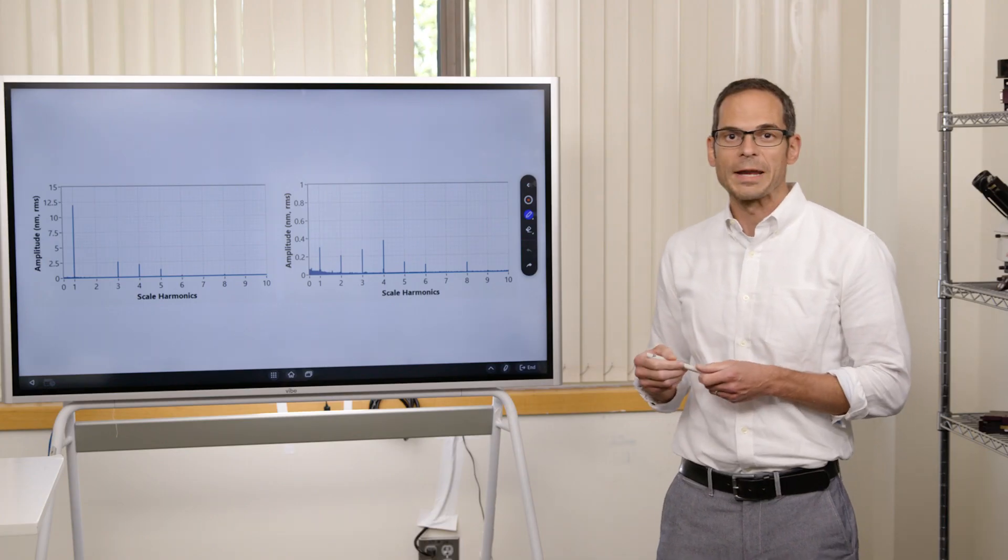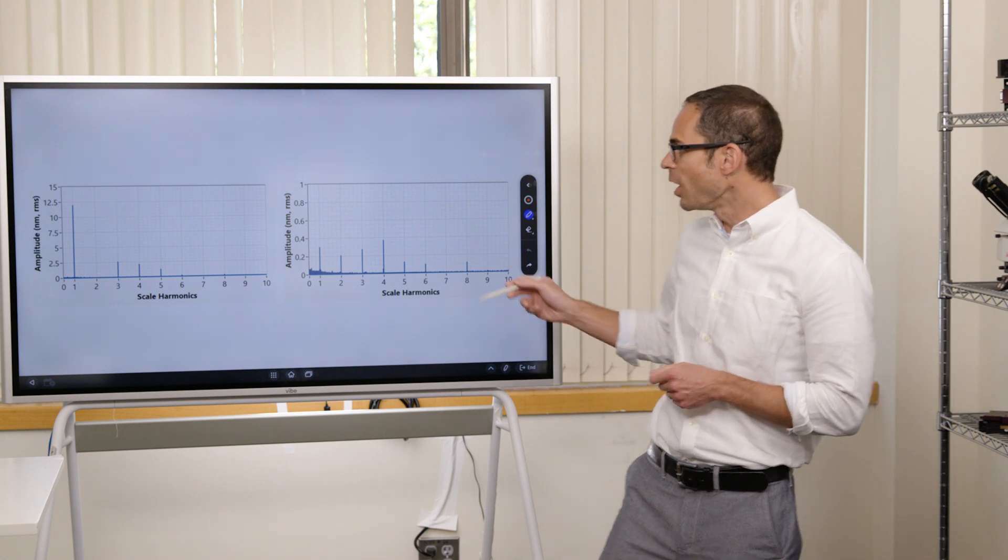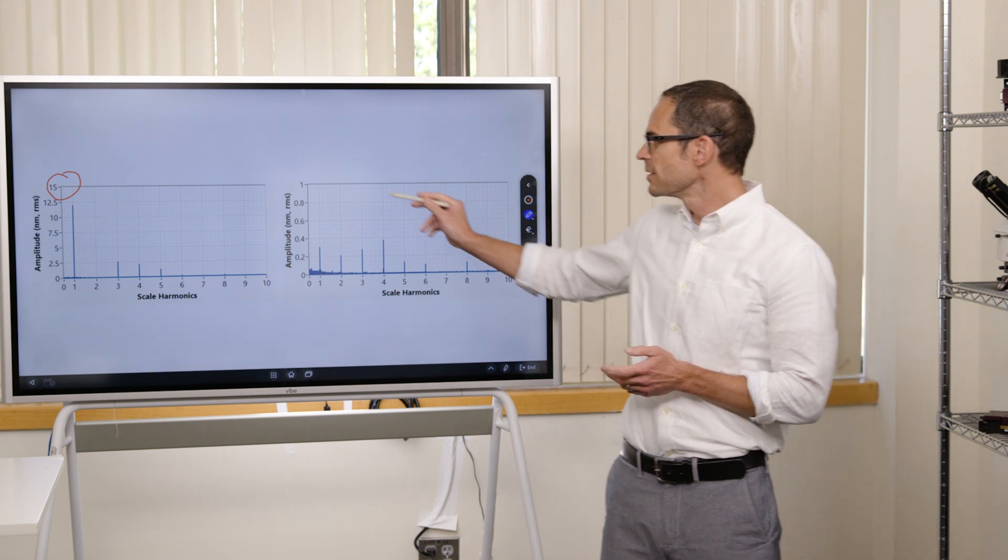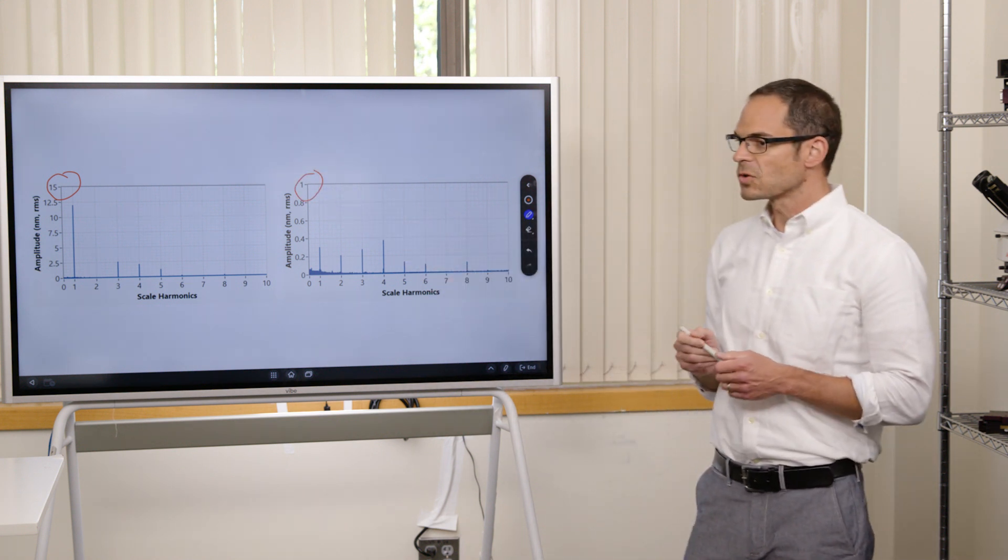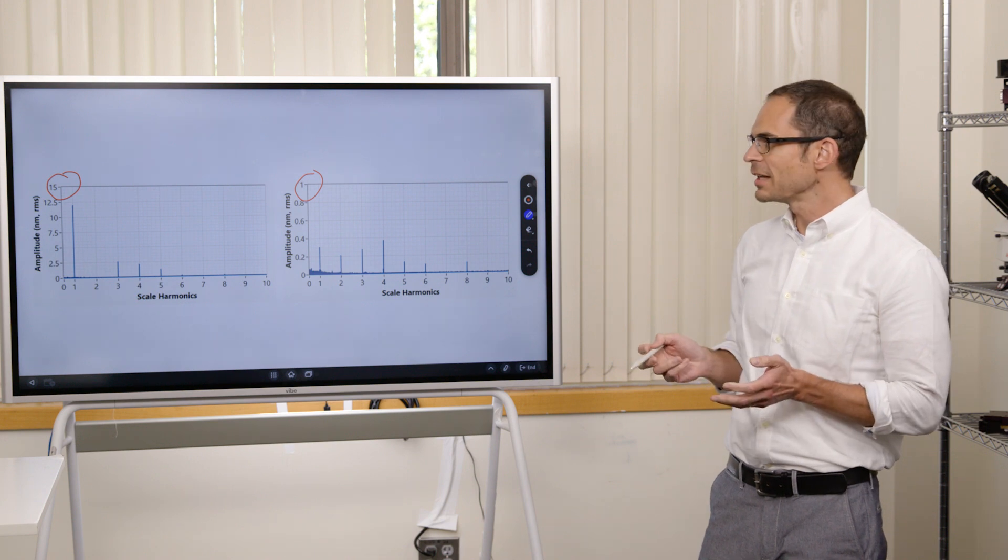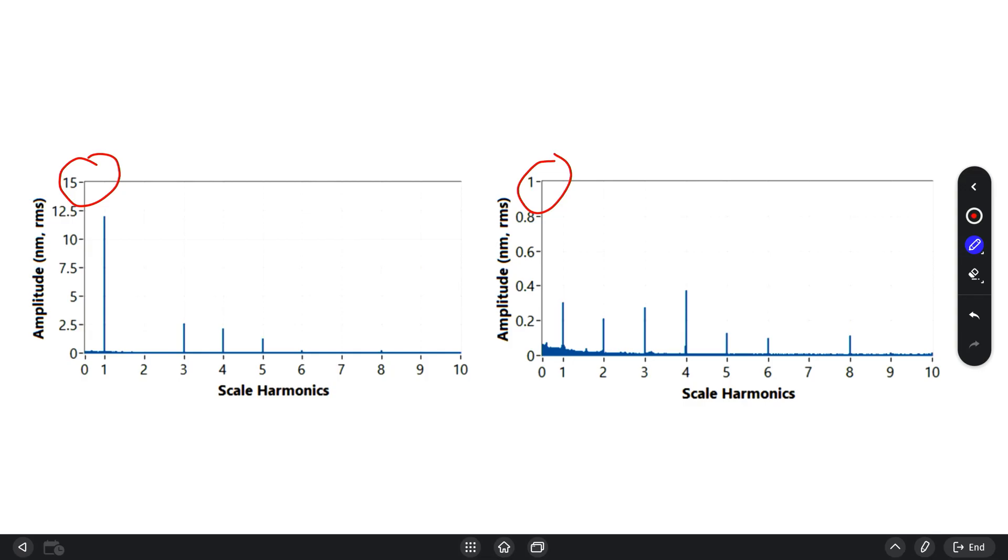And what I want to point out is that you miss 15 to 1. That scale goes up to 15. This one goes up to 1 nanometer RMS. So looking at the scale on the left, you actually have about a peak at 12 nanometers RMS, and that's dominating your error. While the one on the right peak is 300-ish picometers,